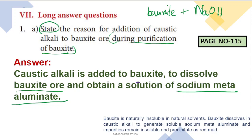Bauxite ore is the base of aluminum. Bauxite ore is insoluble naturally, so we need to dissolve it. That is why it is specific to caustic alkali — NaOH is added to help dissolve it.